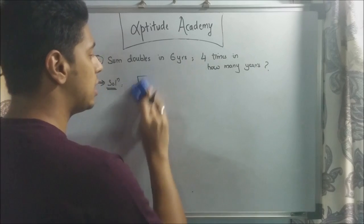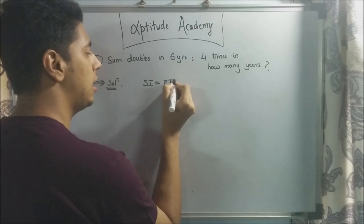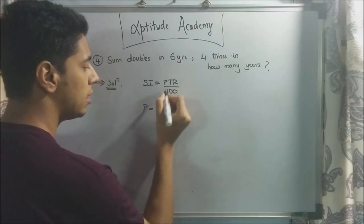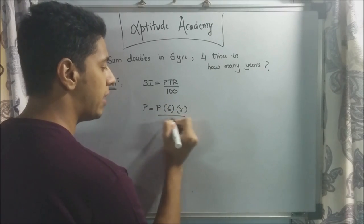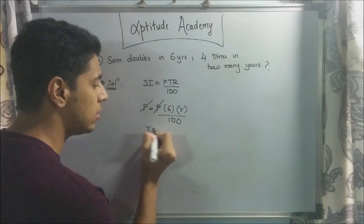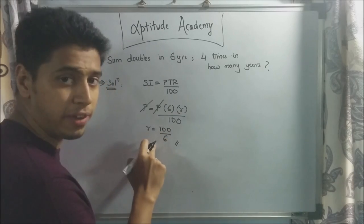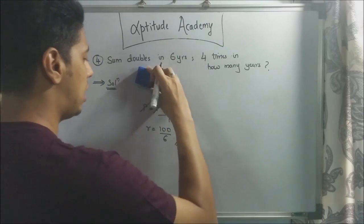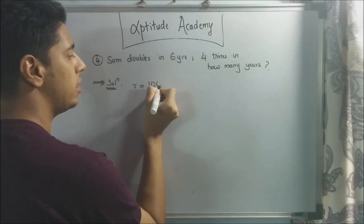We know the simple interest is equal to P. You write your SI is equal to PTR/100. You know SI is equal to P. P, time is six years. Rate, we don't know. Divide by 100. P and P gets cancelled. So R is equal to, take 100 on this side, 100/6. You don't need to simplify this because this is not the final answer. Just keep R is equal to 100/6.